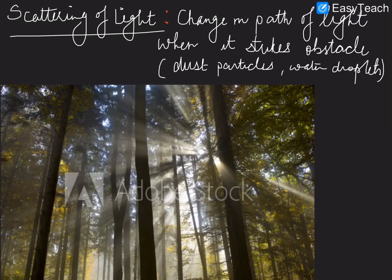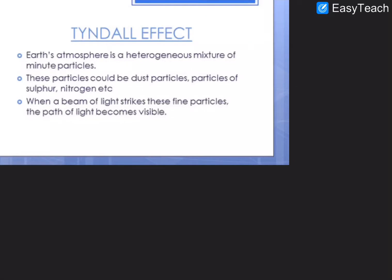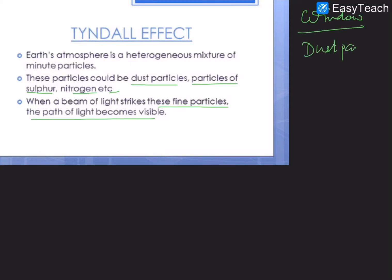The next topic is scattering of light. Scattering of light is defined as the change in the path of light when it strikes any obstacle. For example, the path of light becomes visible when it strikes dust particles or air particles in the Earth's atmosphere. This can also be termed the Tyndall effect, because the Earth's atmosphere is a heterogeneous mixture of minute particles — dust, sulfur, nitrogen, etc. When a beam of light strikes these particles, its path becomes visible, like the fine dust particles you see when sunlight enters through a window.